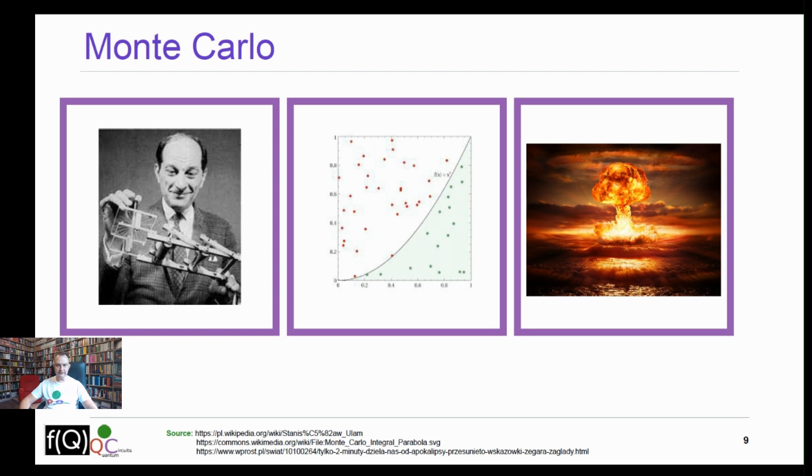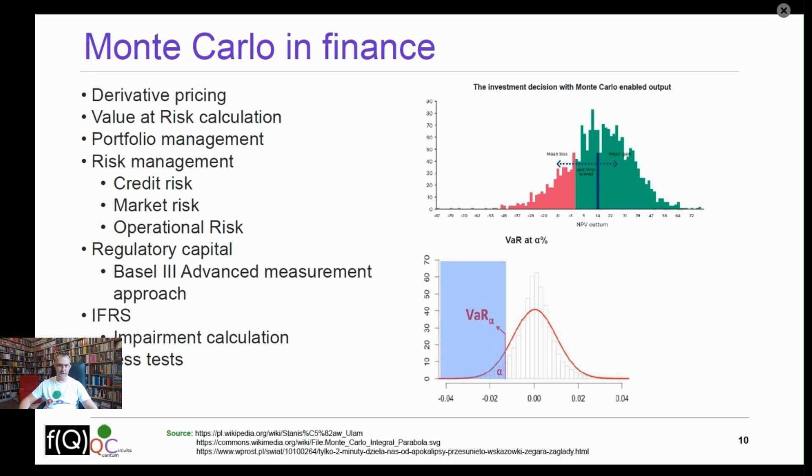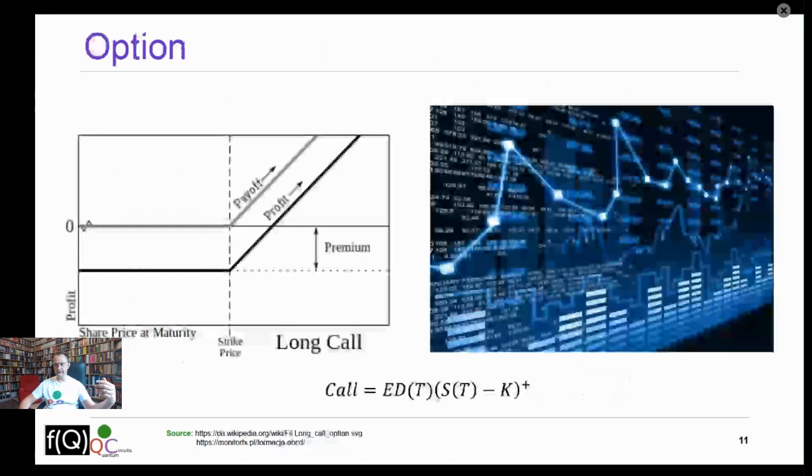We generate a random number, then we check if the number is in the functional area. In derivative pricing, the Monte Carlo method algorithm looks similar. We generate the random path of the asset price, then we calculate the expected value of derivatives. The Monte Carlo method is broadly used in finance. We can use it for portfolio energy, value at risk, risk management, and many other places in finance.